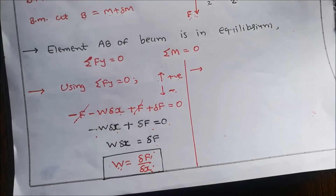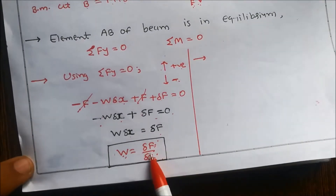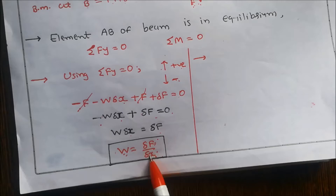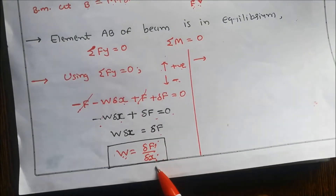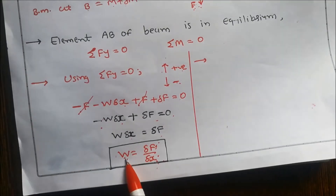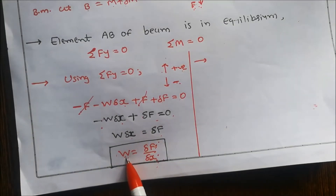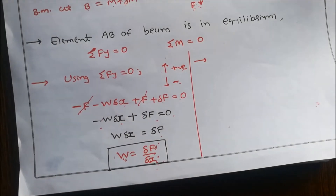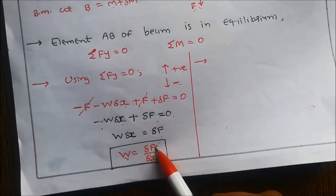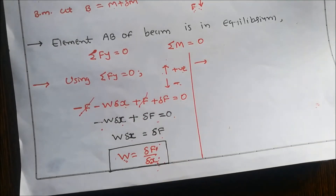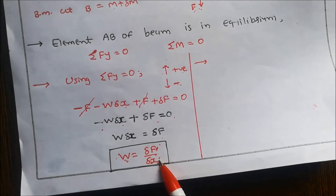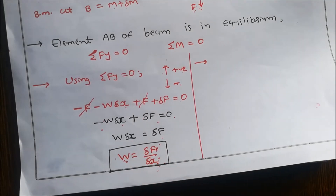Simplifying, minus W into delta x plus delta F equals zero, giving delta F equals W into delta x, so W equals delta F by delta x. The meaning of this equation is: the rate of change of shear force with respect to distance is equal to the intensity of load. In other words, the slope of the shear force curve equals the intensity of load.